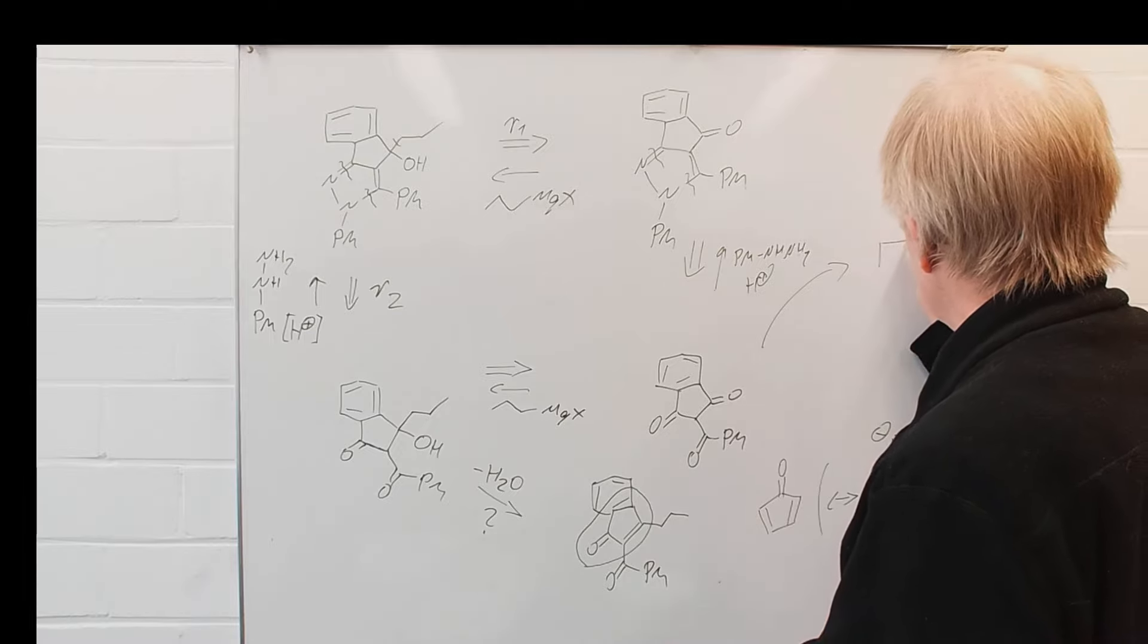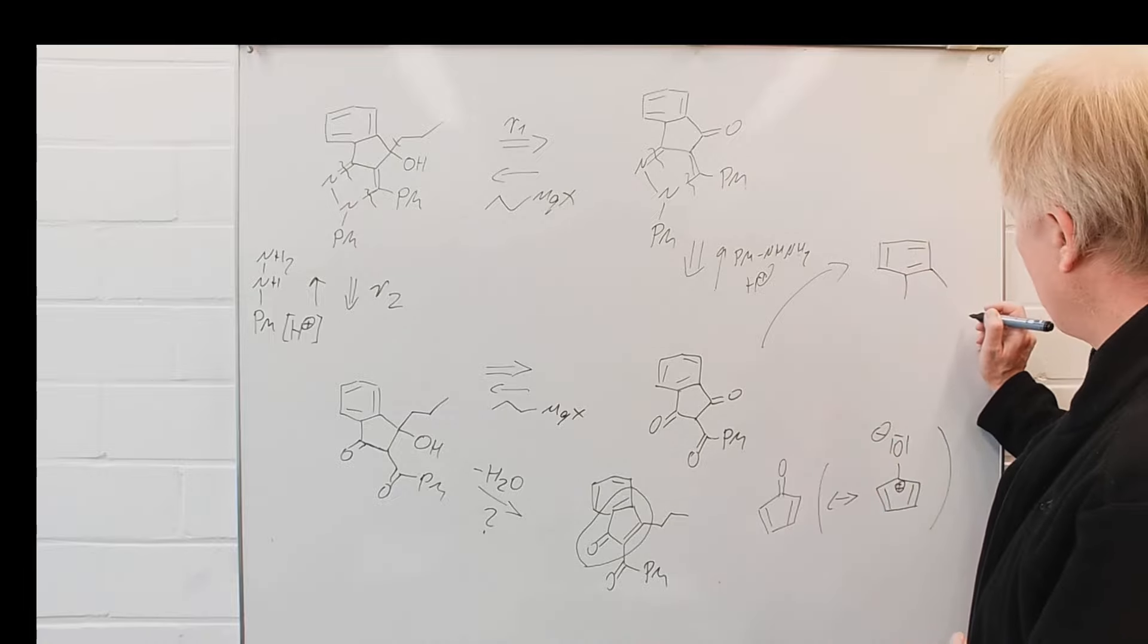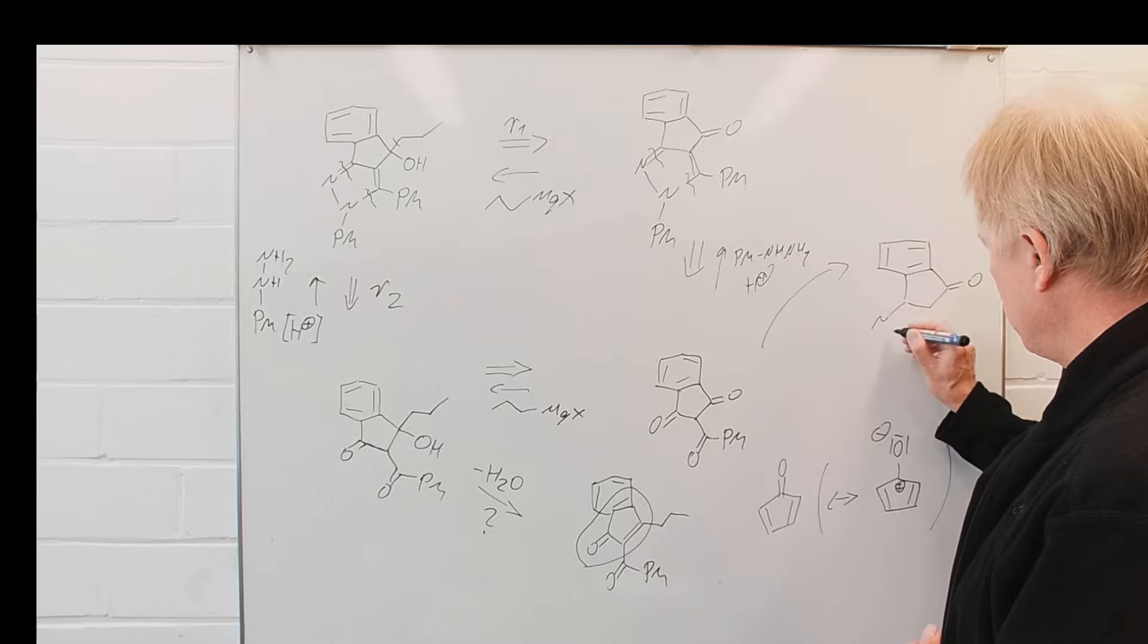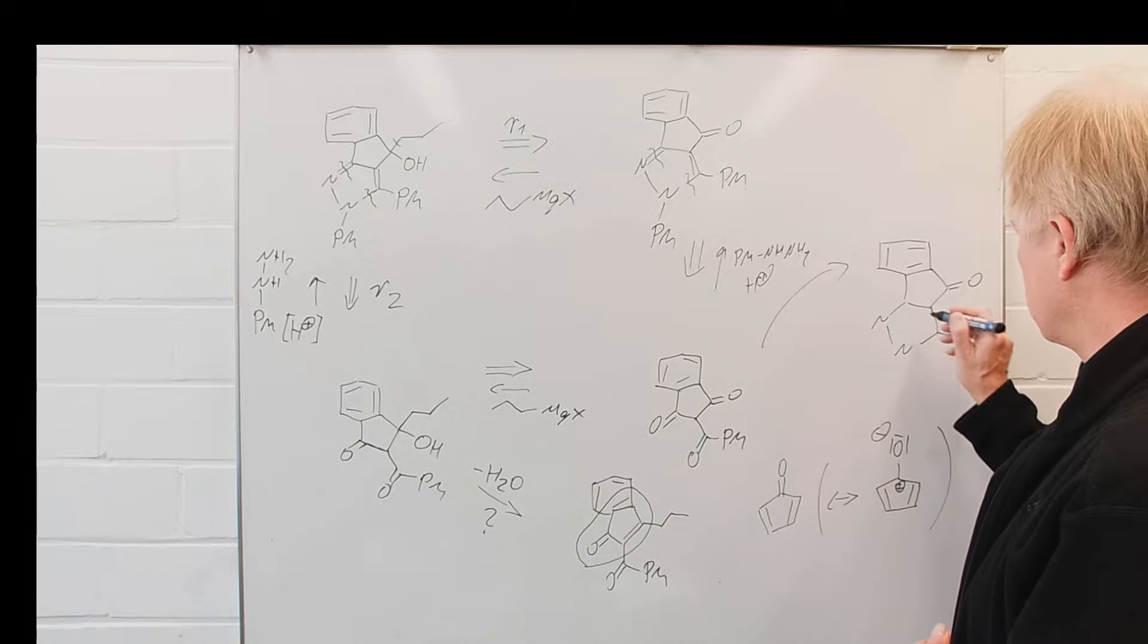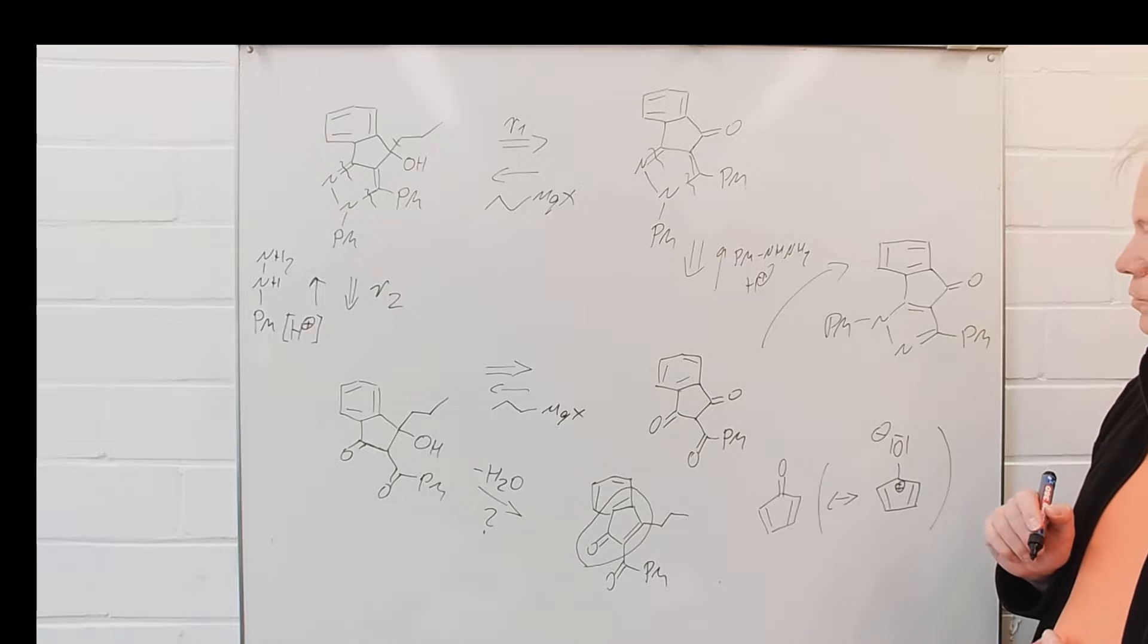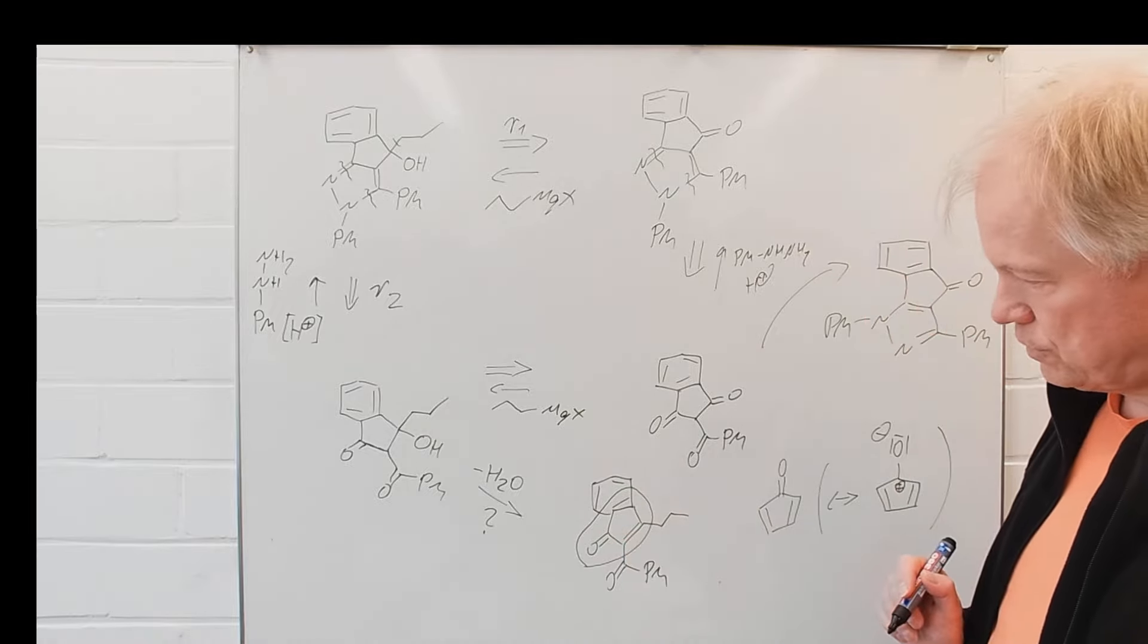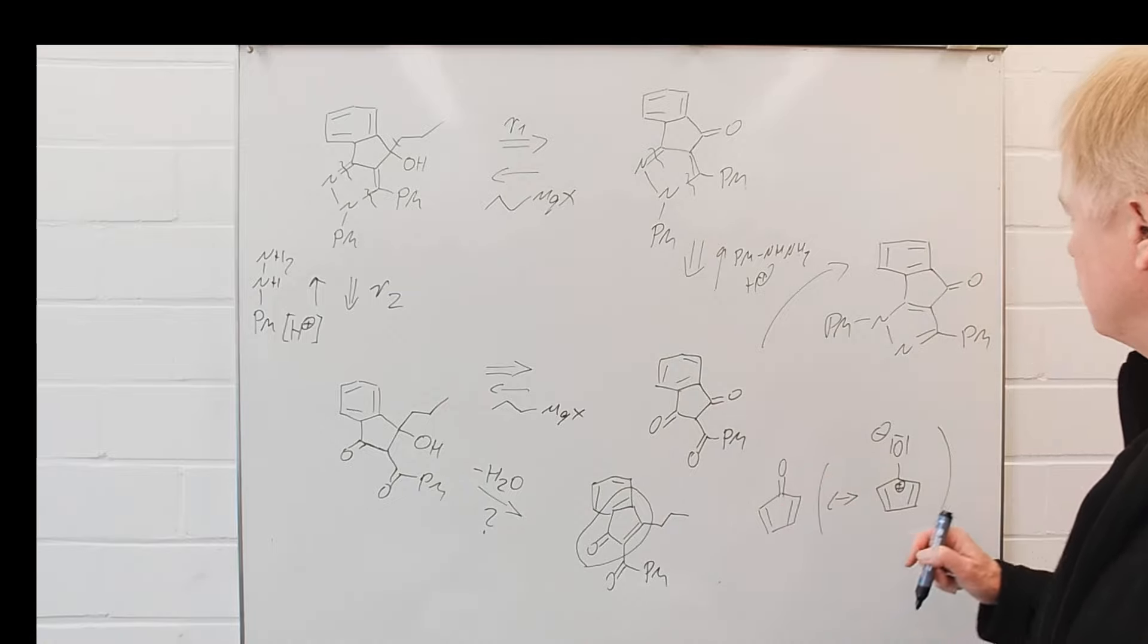So in this case, again here the carbonyl group, there the nitrogen, there the nitrogen, there the phenyl group, here the amine and there is the other phenyl group and what everyone now should notice, here we had the disadvantage of the cyclopentadienyl ketone and here,